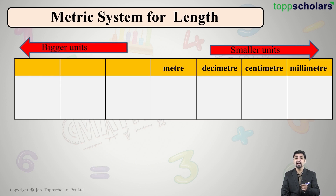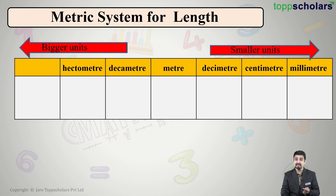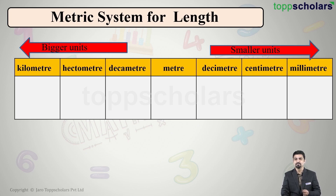Meter is an approximately middle or average unit, and there are bigger units than meter as well. The unit immediately bigger than meter is decameter, followed by the next bigger unit hectometer, followed by the next bigger unit kilometer.